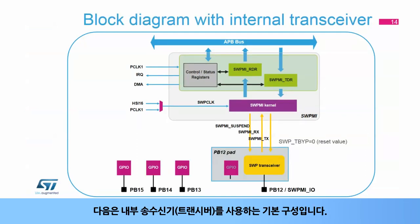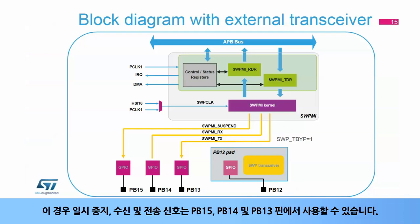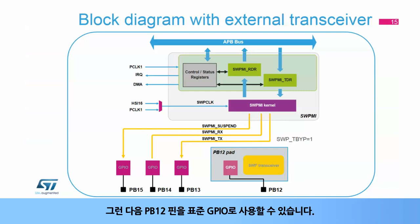Here is the default configuration using the internal transceiver. The SWPMI IO signal is available on pin PB12. It is also possible to connect an external transceiver using a configuration bit in the SWPMI registers. In this case, the suspend, receive, and transmit signals are available on pins PB15, PB14, and PB13. Pin PB12 can then be used as a standard GPIO.